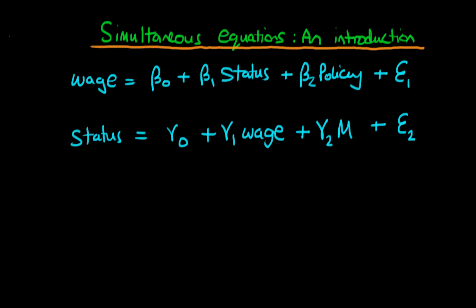So we've got two equations, and there is obviously some coupling between these two equations, because wage in the second equation appears as an independent variable, whereas it is the dependent variable of the first equation. And similarly, status appears as the dependent variable of the second equation, but it's actually the independent variable from the first. So we can draw arrows like this.